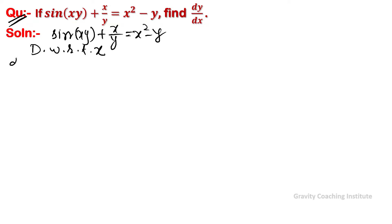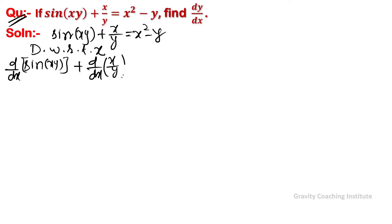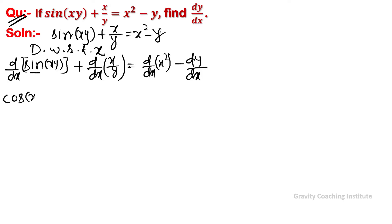Differentiating with respect to x: sin(xy) plus differentiation of x/y equal to differentiation of x² minus differentiation of y. We cannot differentiate this directly, so we use the chain rule. By chain rule, first differentiate sine to get cos(xy), and then product rule will be used.